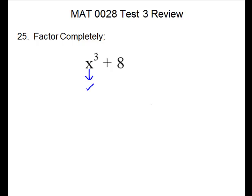For x cubed, it will be just x. For 8, the cube root is 2 — what would go times itself 3 times. So we're going to be able to do the problem. It works in a pattern, so we're going to use the roots with the sign of the problem. X plus 2 makes our first set of parentheses. The second set of parentheses on this kind is a trinomial. For your signs in it, the first sign is the opposite of the first one, so that you can get some canceling. The last sign is always plus.